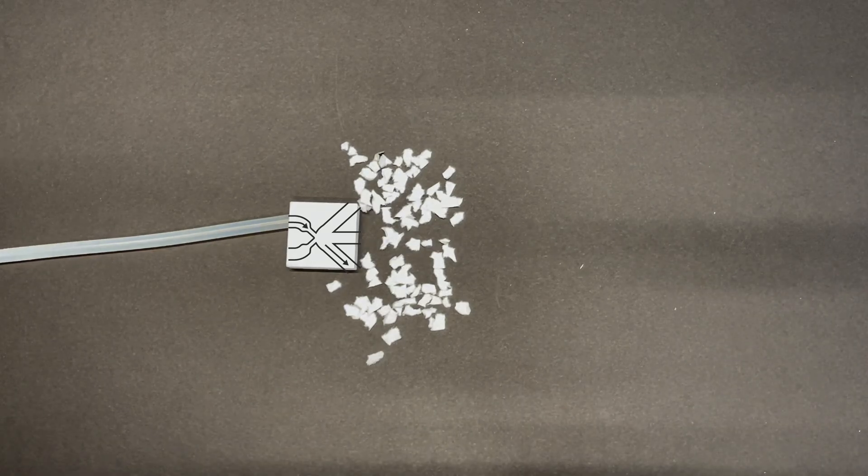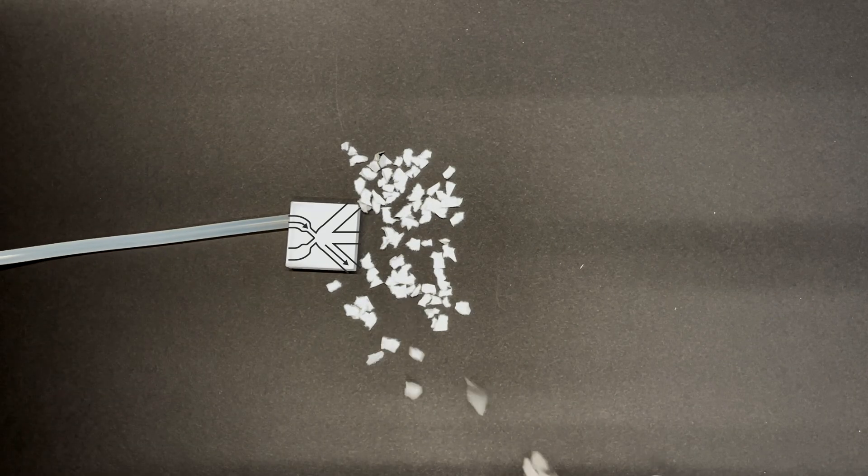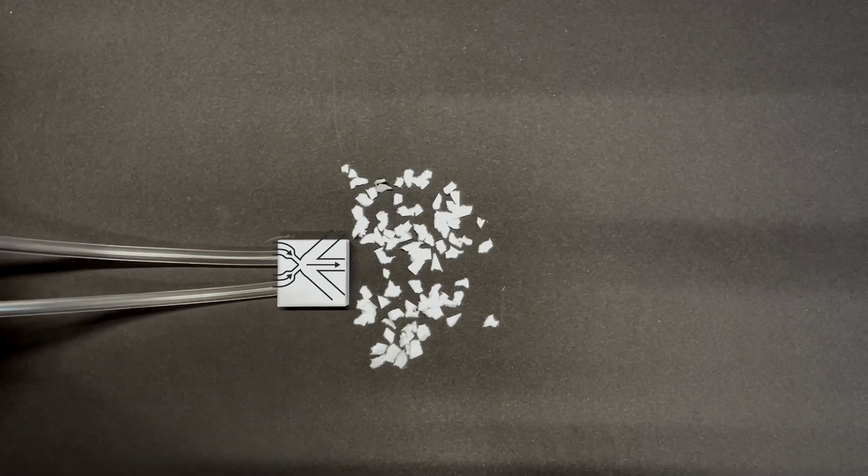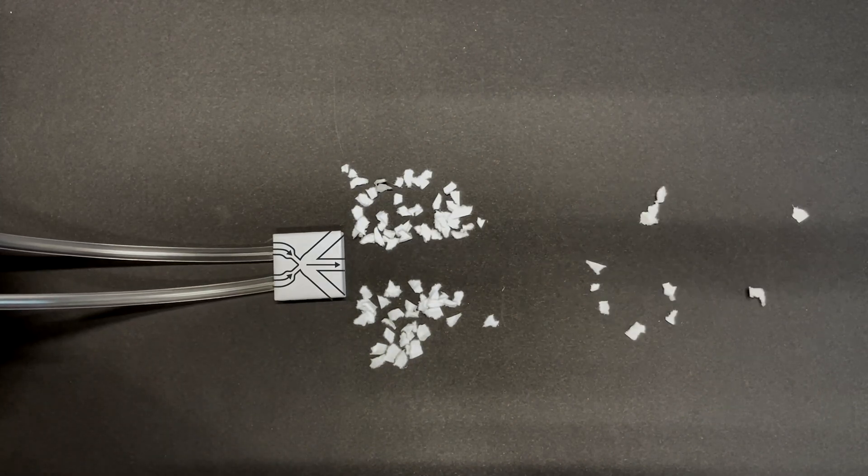In this AND gate, when only one input is active, air flows out here. But when both inputs are active, they meet in the middle, and the signal comes out here.